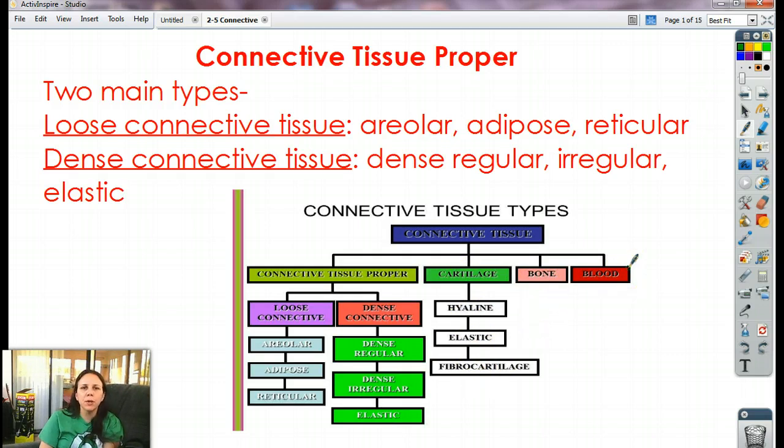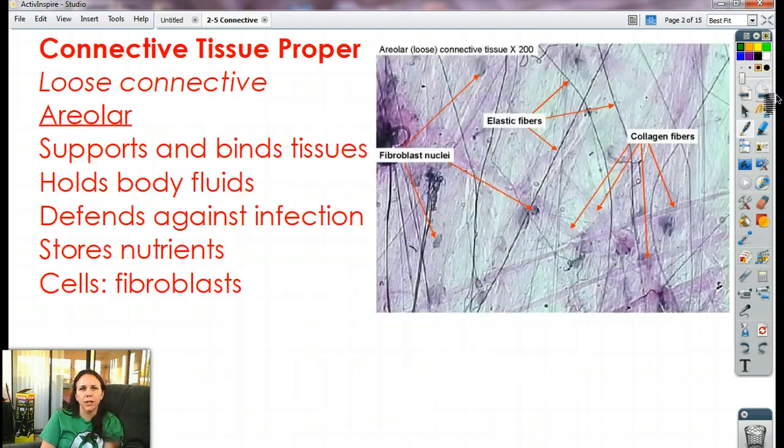So we're going to start out with the first one, which is connective tissue proper. There's two main types, like you can see from the little diagram right here. There's loose connective tissue, which includes areolar, adipose, reticular. And dense connective tissue, which includes dense regular, dense irregular, and elastic. Here we go, buckle your seatbelts, it'll be a fun ride.